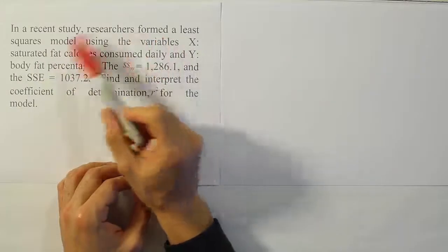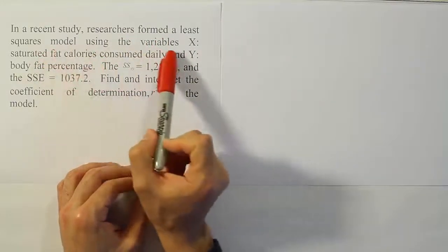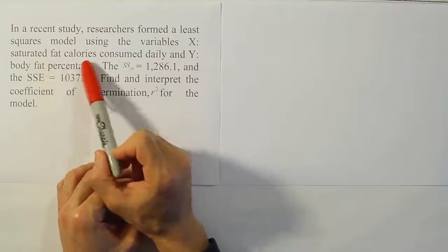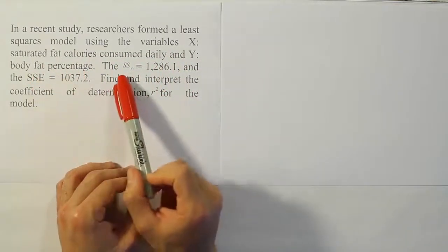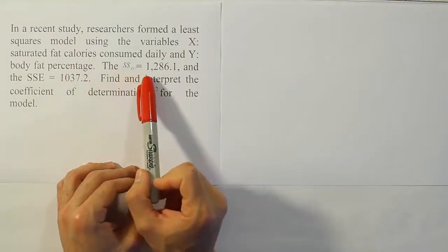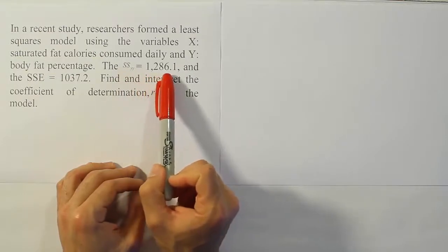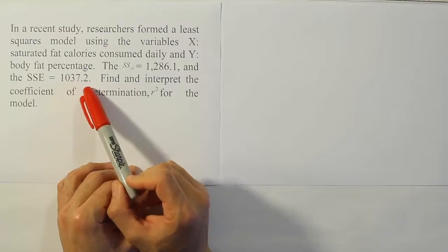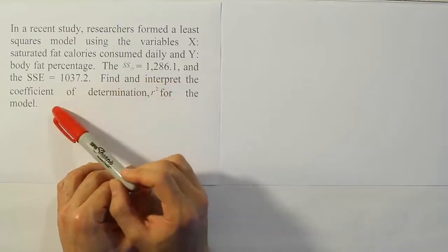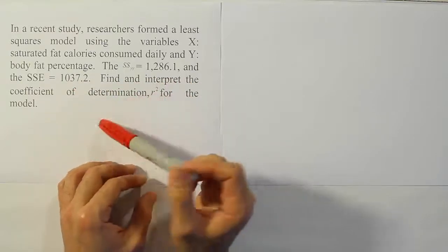In a recent study, researchers formed a least squares model using the variables X, saturated fat calories consumed daily, and Y, body fat percentage. The SSyy equals 1,286.1 and the SSE equals 1,037.2. Find and interpret the coefficient of determination R squared for the model.